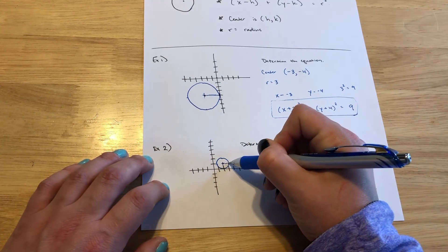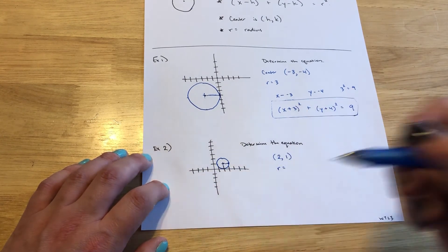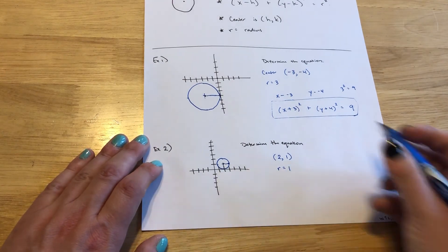Meanwhile, the radius, if we go straight right or straight up or down or left, that radius is 1 unit.